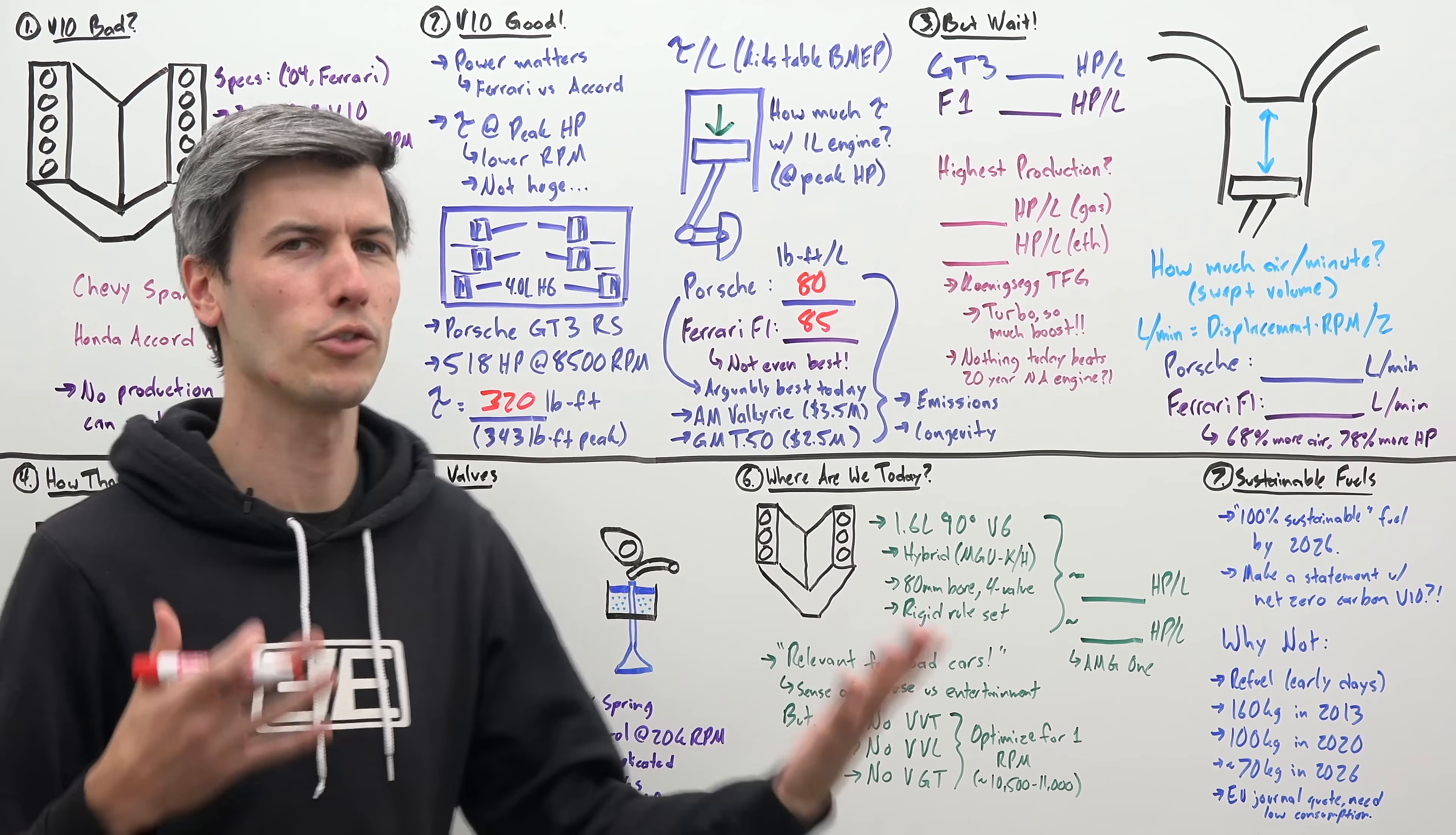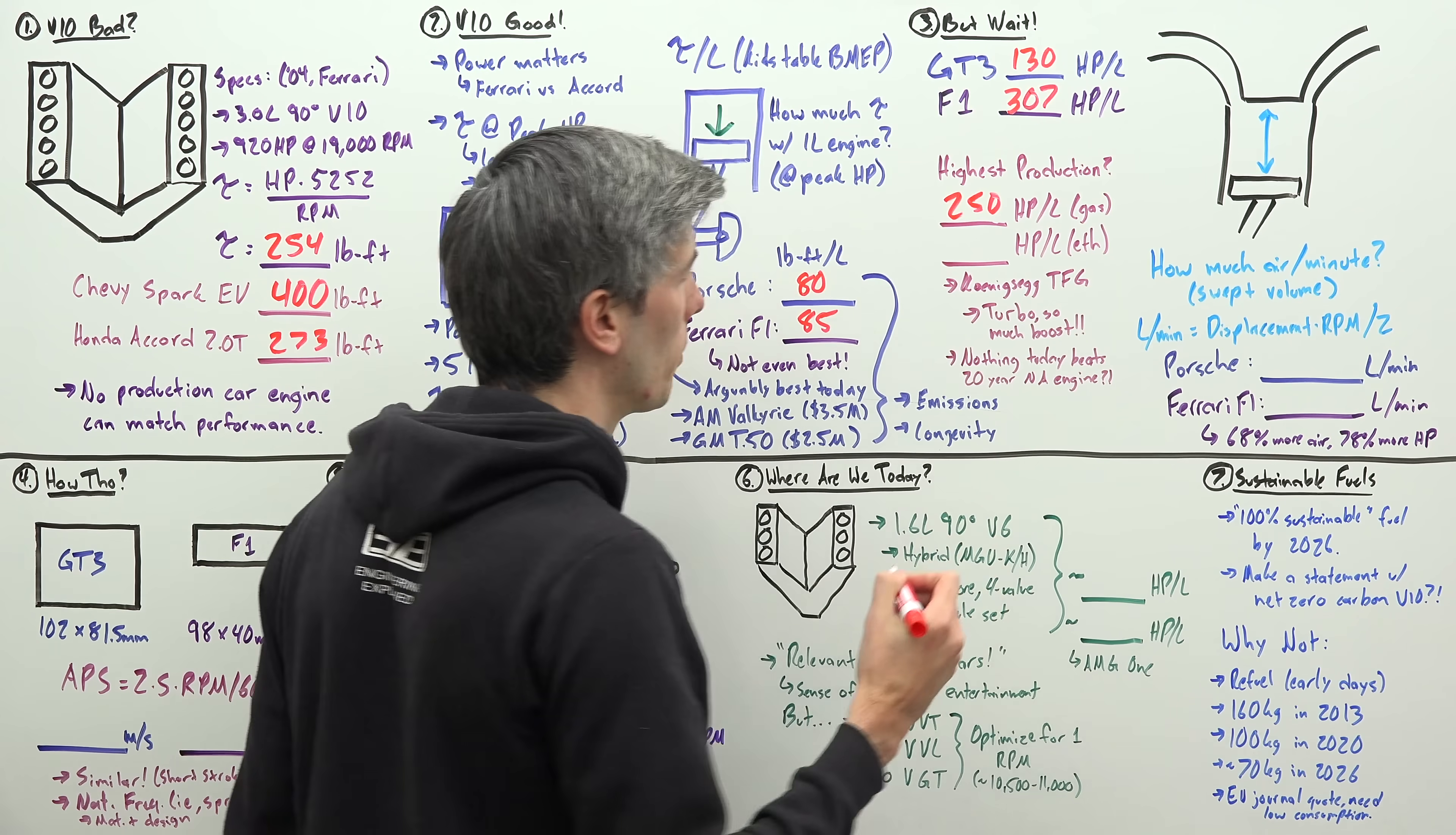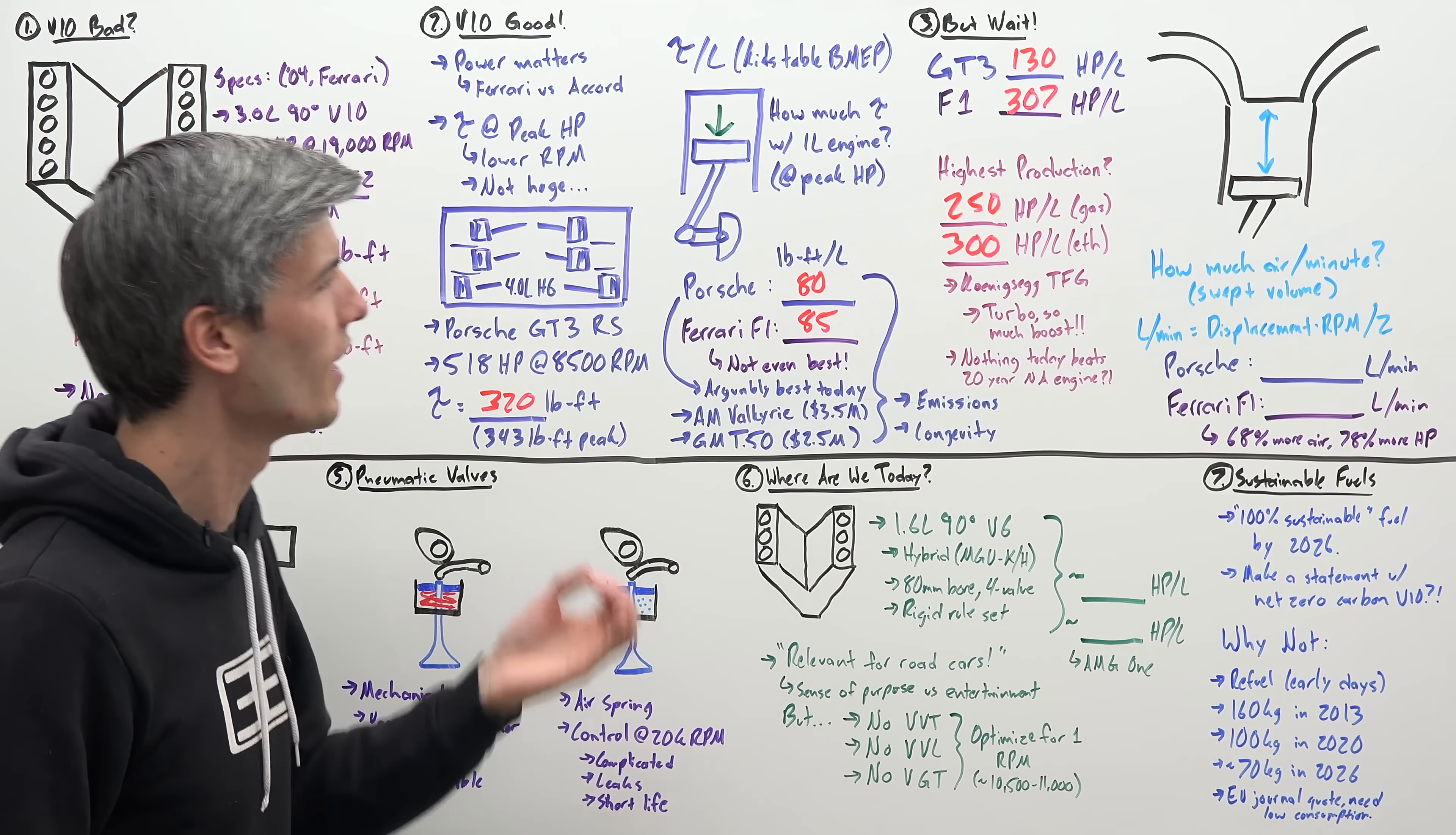So what about horsepower per liter? And usually, this really isn't that fair of a comparison unless we're just talking about two naturally aspirated engines. In the case of the Porsche GT3, we have about 130 horsepower per liter versus the Ferrari F1 engine over 300 horsepower per liter. Absolutely absurd! So you can even compare this to today's best turbo engines and they get nowhere near it. If you look at the Koenigsegg tiny friendly giant engine, when it's running on gasoline, it's making 250 horsepower per liter, 500 horsepower out of a little 2 liter engine. And if you cheat a little bit, you run on ethanol, well then you're getting 300 horsepower per liter. But even still, it can't match it. The Ferrari F1 engine doing better than today's best production car using a ton of boost. Nothing today can beat a 20 year old naturally aspirated engine in horsepower per liter. Absolutely absurd!